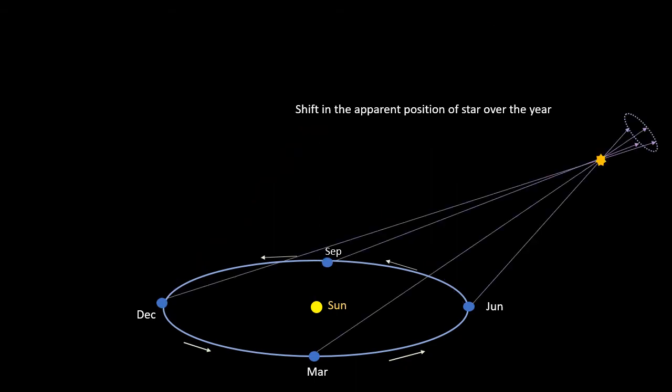And of course, a star doesn't need to be at a right angle to the plane of the Earth's orbit, which is called the ecliptic, to show a parallax. Any angle will do.